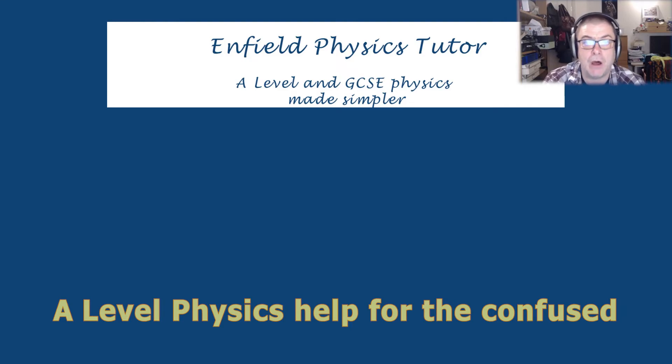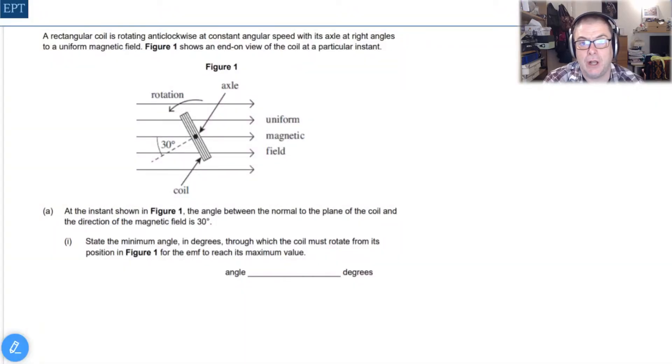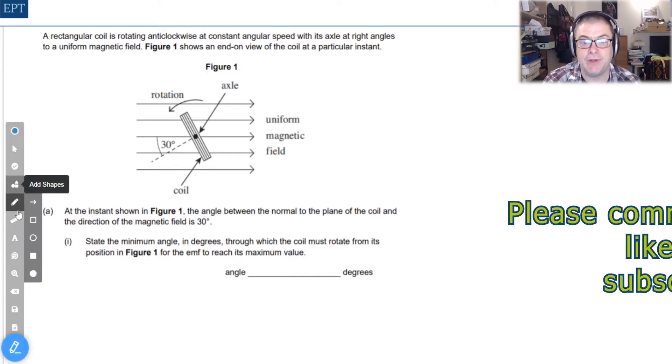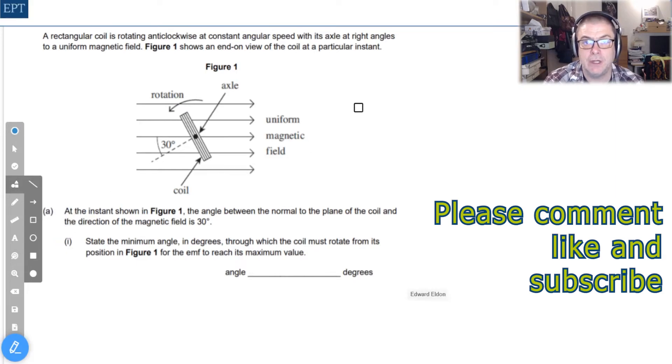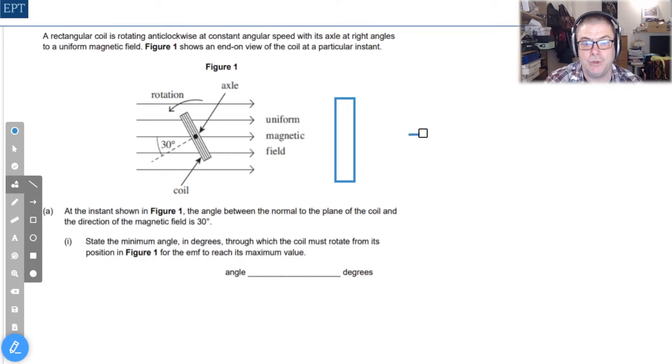In the first part we've been asked to consider what angle we need to turn the coil through in order for the EMF to be at its maximum value. And in order to think about this I want to imagine the coil in two positions - what you might call horizontal and vertical, or maybe one and two.